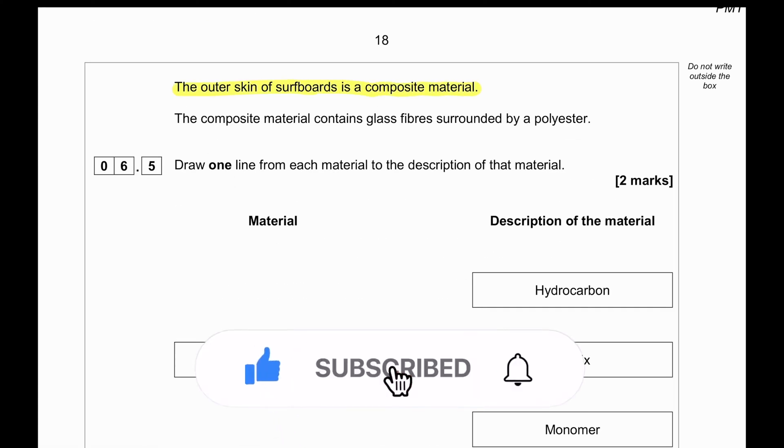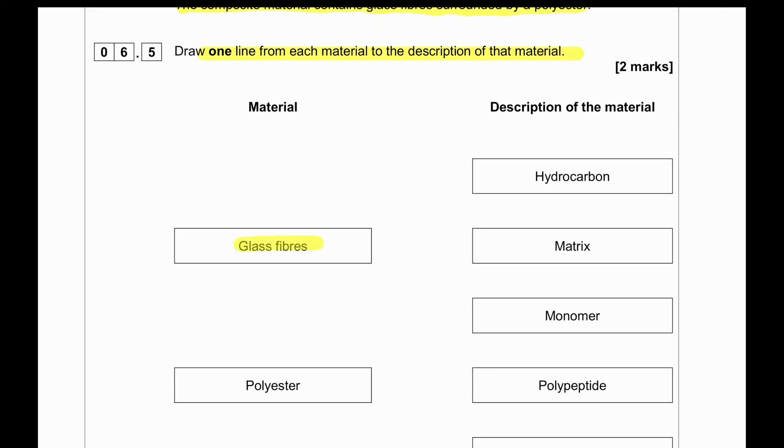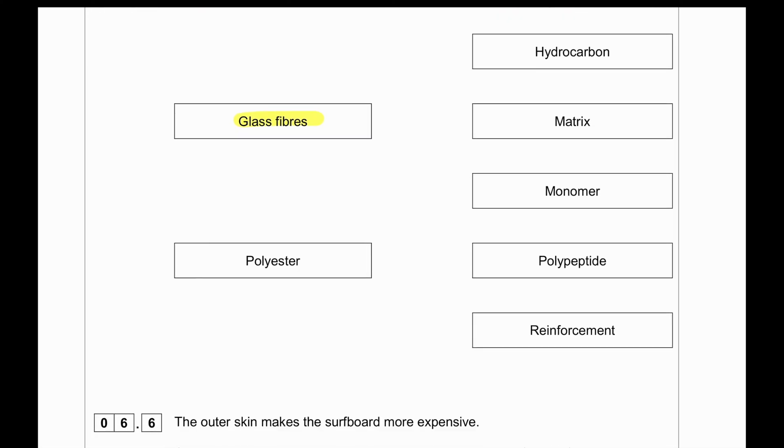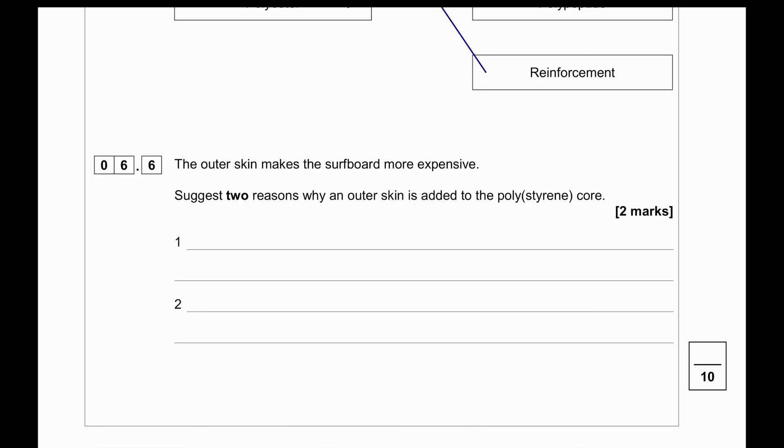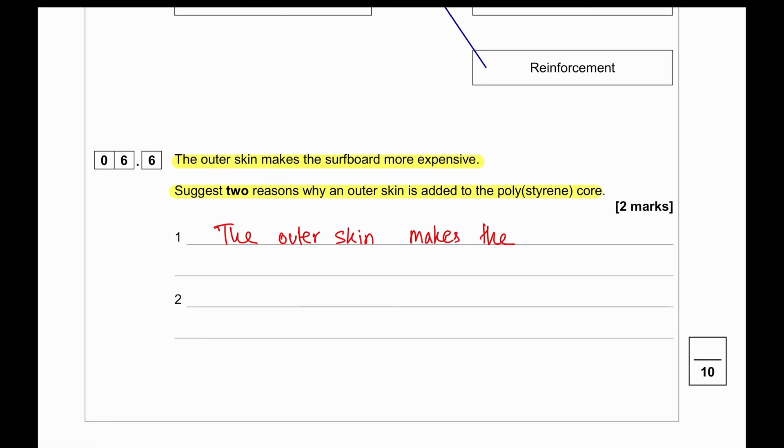The outer skin of the surfboard is a composite material containing glass fibers surrounded by polyester. Draw one line from each material to the description. Glass fibers are a form of reinforcement, so glass fibers connect to reinforcement. Polyester forms the matrix. The outer skin makes surfboards more expensive. Give two reasons why an outer skin is added to the polystyrene core: the outer skin makes the polystyrene core harder, stronger, tougher, more rigid, or waterproof. Polystyrene by itself can soak in water when expanded.